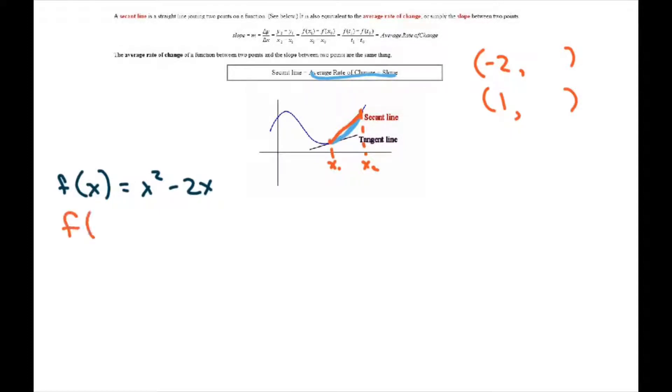So we are just going to plug in f of negative 2. This is kind of what we are doing right here. You plug that in, you get negative 2 squared minus 2 times negative 2. So negative 2 squared is 4 plus 4 equals 8. So that equals 8. Now let's plug in 1.